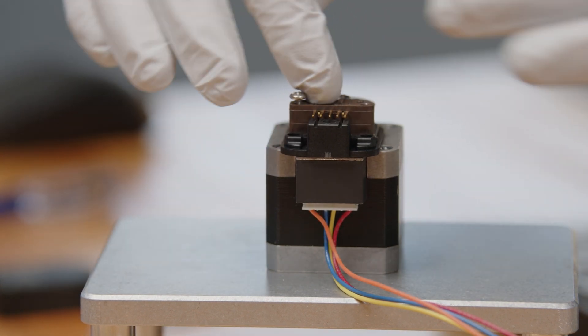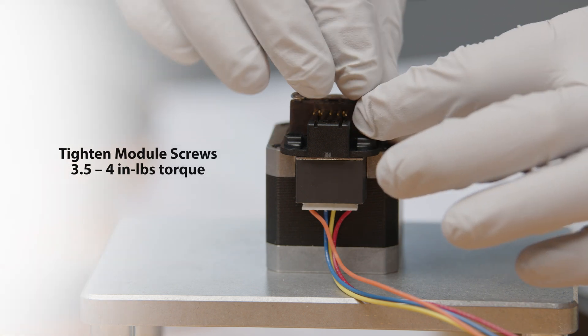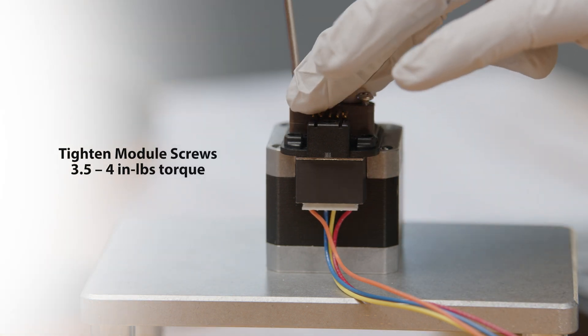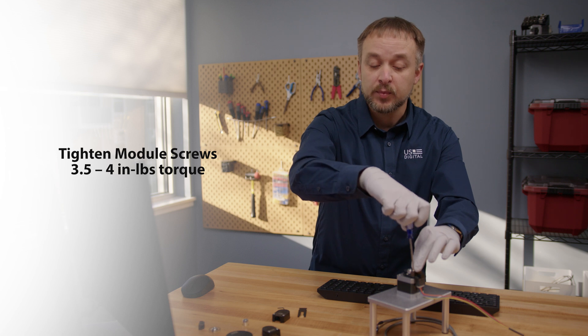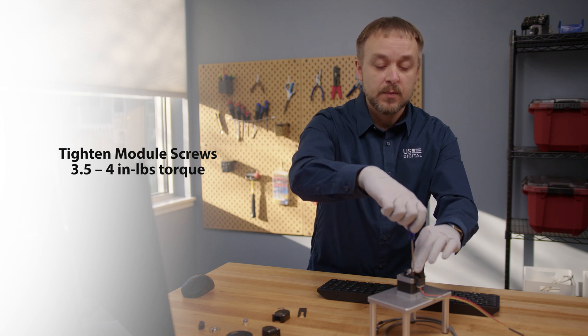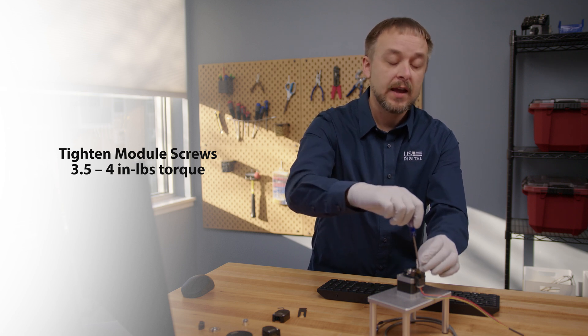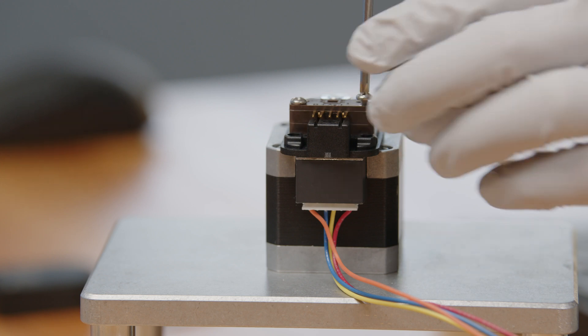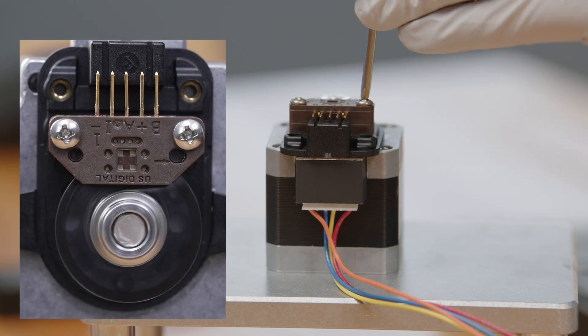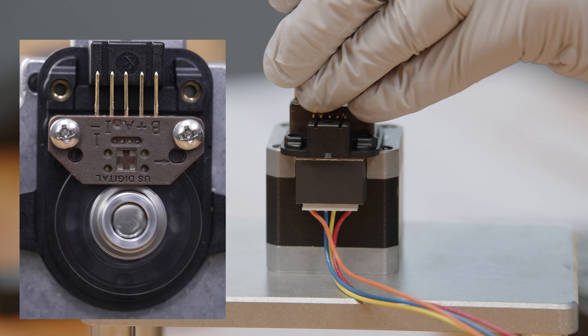If you are still having issues, even after rechecking the alignment, you may want to verify the run out of the shaft or axial play in the shaft as well. Because if the shaft itself has run out, then that can make the disk move in and out of alignment as the shaft rotates.